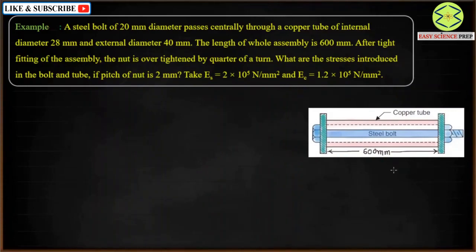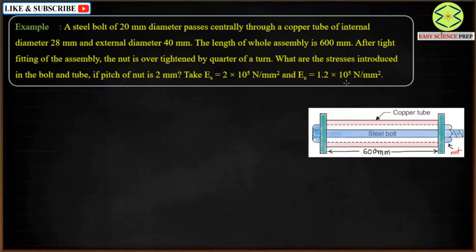The assembly has been tightly fitted and we are assuming that when it is tightly fitted, there are no stresses in the steel or copper tube. After tight fitting of the assembly, the nut is over-tightened by a quarter of a turn, meaning 1/4 of a complete rotation. We need to find the stresses induced in the bolt and tube. The pitch of the nut is given as 2 mm, and the modulus of elasticity for the steel bolt and copper tube are also given.